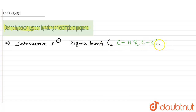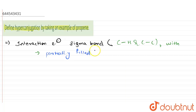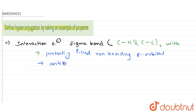We consider the interaction of electrons in the sigma bond with adjacent empty or partially filled non-bonding p orbitals. This interaction can also happen with anti-bonding sigma or pi orbitals, or it can happen between the filled pi orbitals.